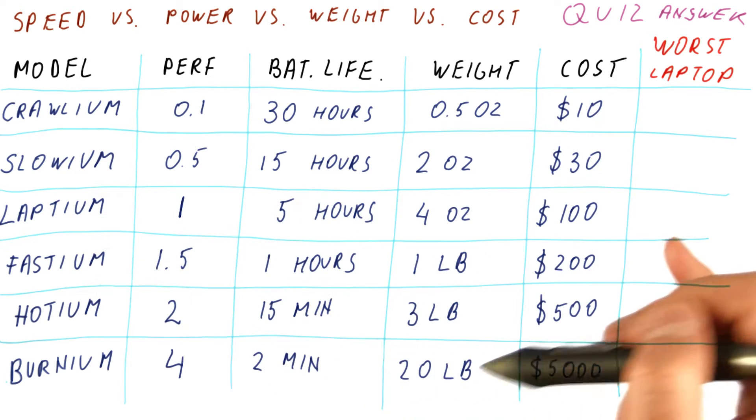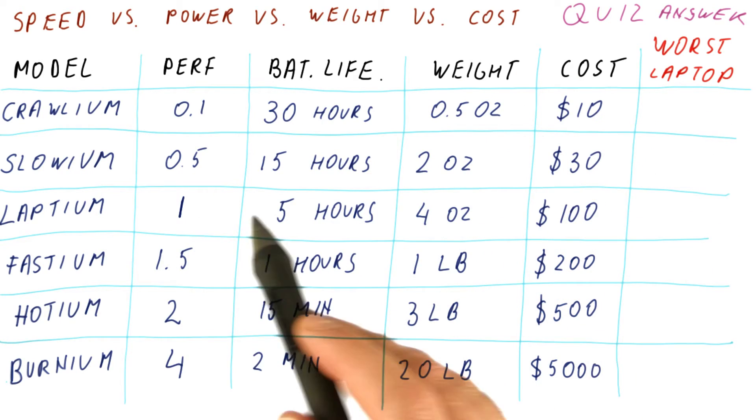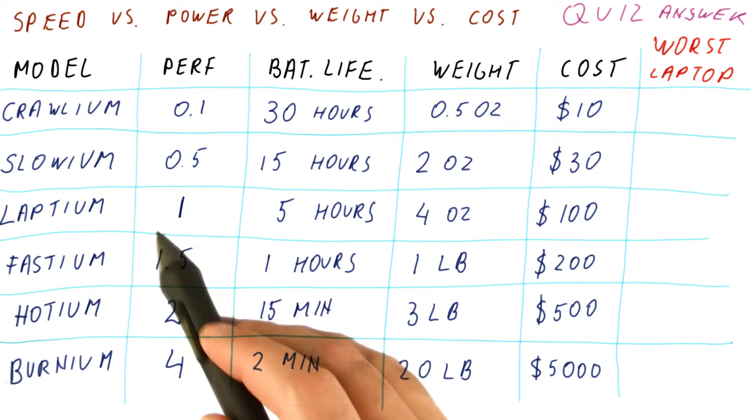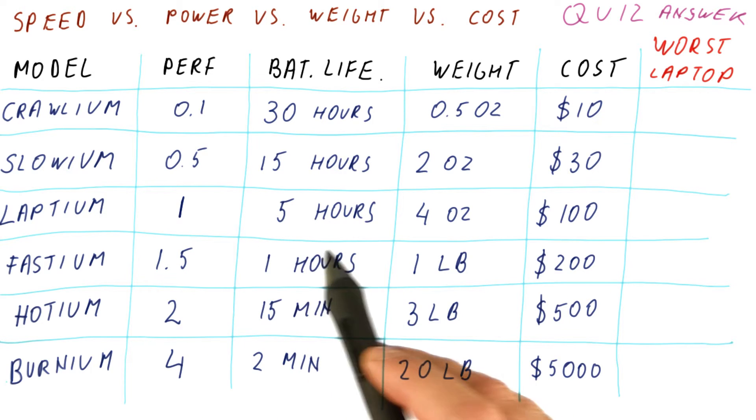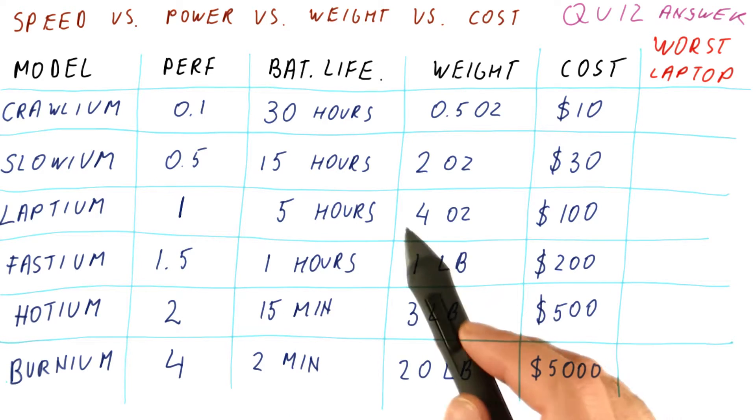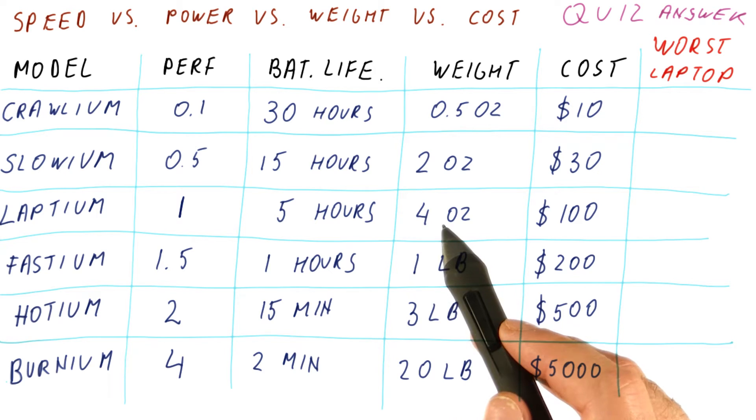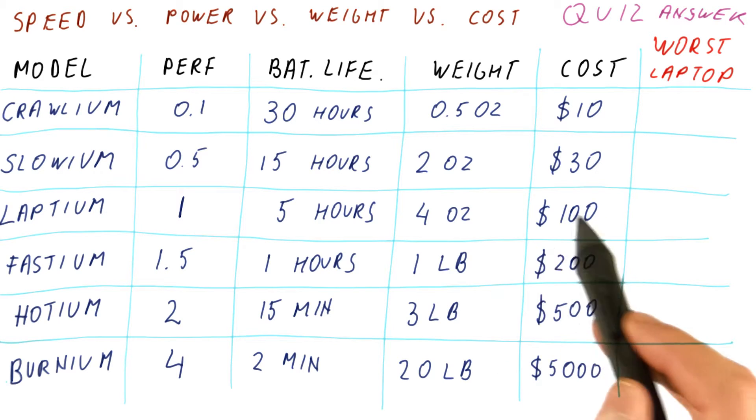Well, most of these are actually not very good processors. Laptium seems reasonable, it gives you good performance. Five hour battery life is not too bad. Four ounces for the processor, you can build a laptop with that, and about $100 for the processor, the laptop will probably be about $1,000, so that's fine.